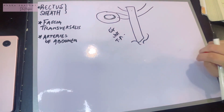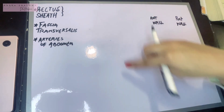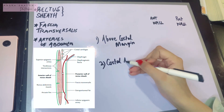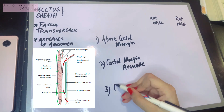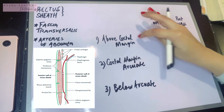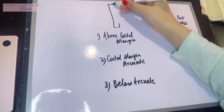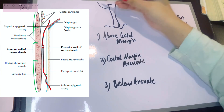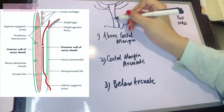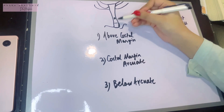The rectus sheath has an anterior wall and a posterior wall. We can divide the rectus abdominis into three locations: above the costal margin, from the costal margin up to the arcuate line, and below the arcuate line. These divisions are necessary because the anterior and posterior wall differ in their compositions at each location. The arcuate line is a point midway between the pubic symphysis and the umbilicus.